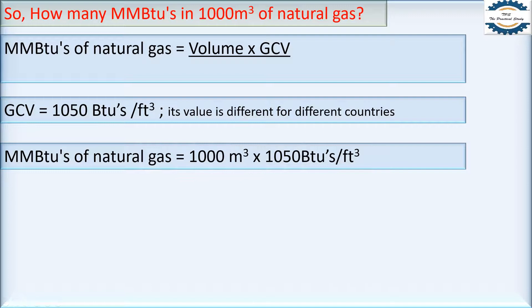So MMBtu's of natural gas is equal to, we just need to put the values: volume is equal to 1000 meter cube and GCV is equal to 1050 BTU's per feet cube. That means in our gas, its quality is if I combust one feet cube of natural gas, then I will get 1050 BTU's. So now it's a game of balancing the units.